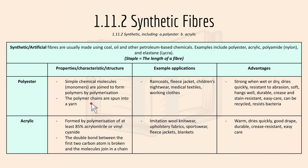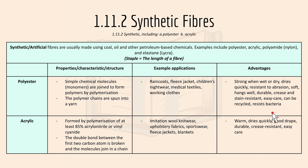The polymer chains are spun into a yarn. Examples of polyester products include raincoats, fleece jackets, and children's nightwear. Advantages: it's strong when wet or dry, dries quickly, is resistant to abrasion, soft, hangs well, and durable.